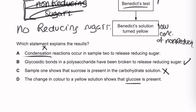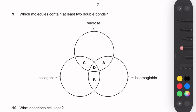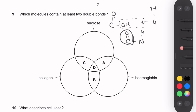Question 9: Which molecules contain at least two double bonds? Sucrose, collagen, and hemoglobin. Collagen and hemoglobin are polymers of amino acids; each peptide bond retains a C=O double bond from the carboxyl group. So collagen and hemoglobin contain many double bonds. Sucrose has no double bonds. The answer is B — collagen and hemoglobin.